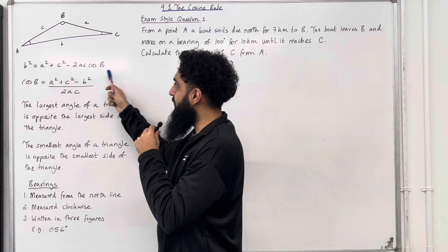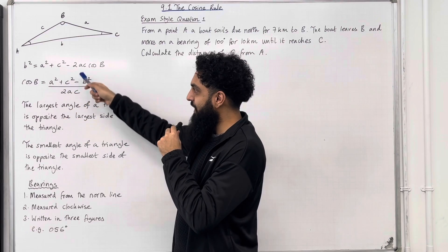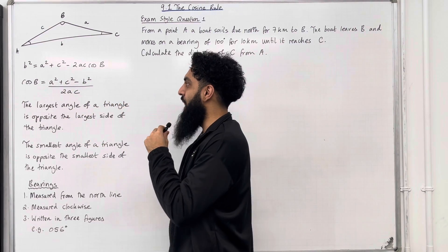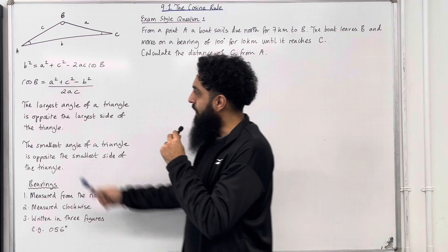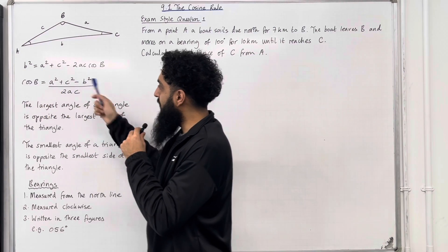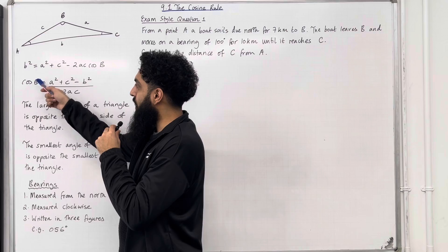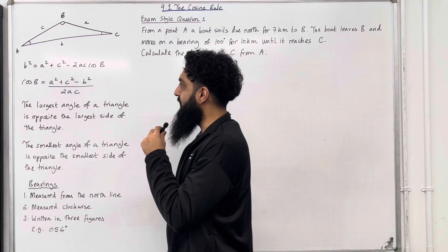Now we can make cos B the subject to give us cos B equals a squared plus c squared minus b squared all over 2ac. Again, we can apply some modifications. If this part was cos A, then over here we would have minus a squared. If this part was cos C, then over here we would have minus c squared.